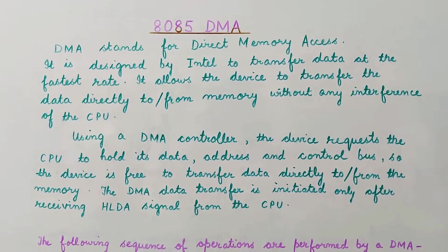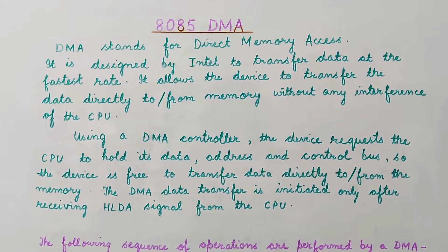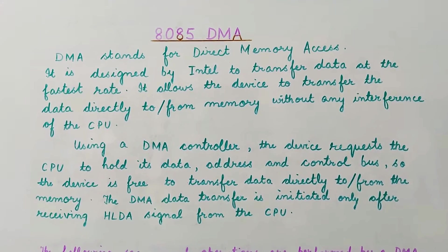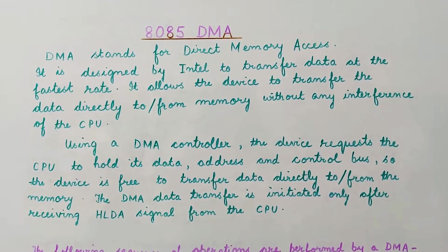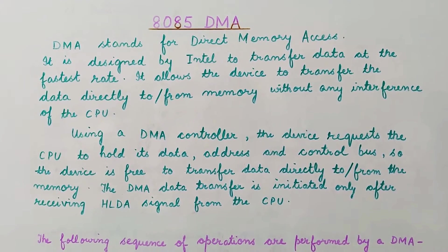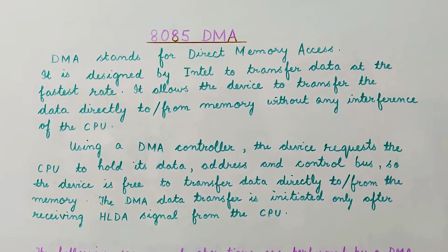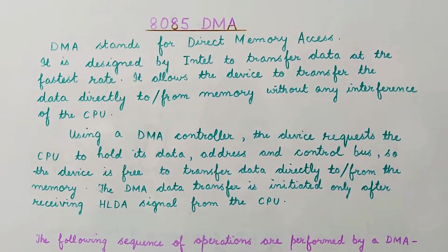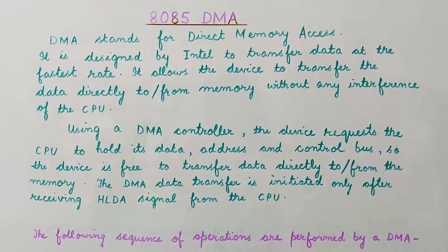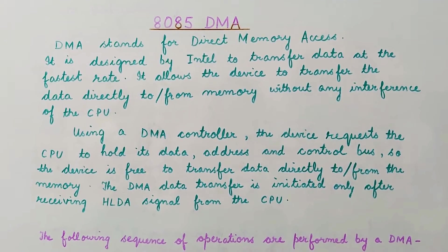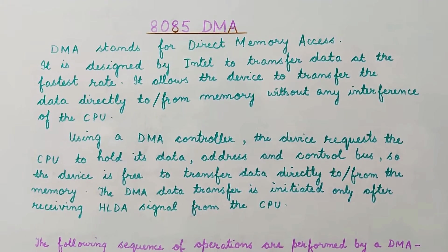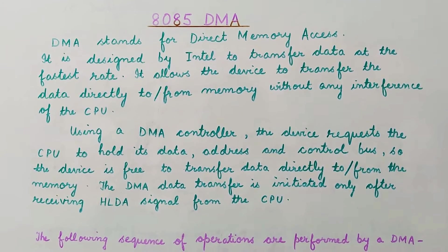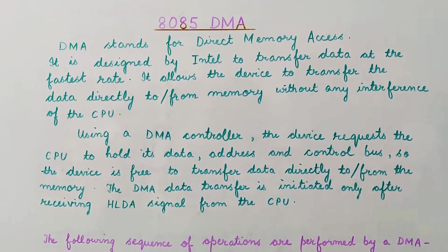If you want to transfer data at a fast rate, then it will be done through DMA. This device allows transferring data directly to or from the memory to the input/output without any interference of the CPU. This means data can transfer from input/output to memory or from memory to input/output, and this data transfer is done using a DMA controller.